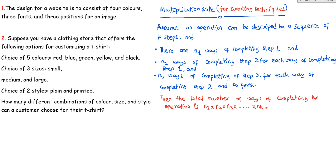In simple terms, assuming that we want to carry out an operation, there are n1 ways of performing the first task, n2 ways of performing the second task, and n3 ways of performing the third task. The total number of ways we can use to complete that operation is just the product of the number of ways of performing each of the tasks.